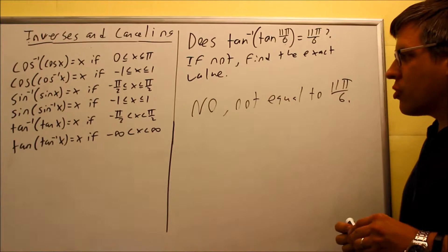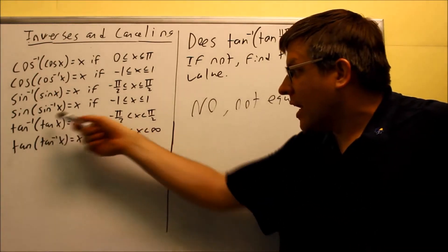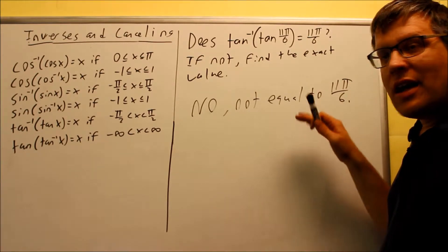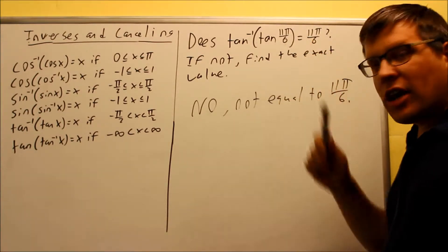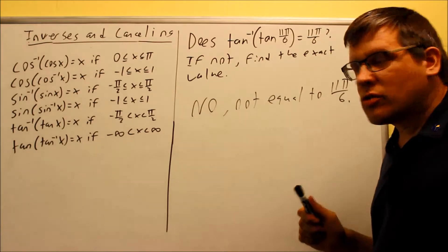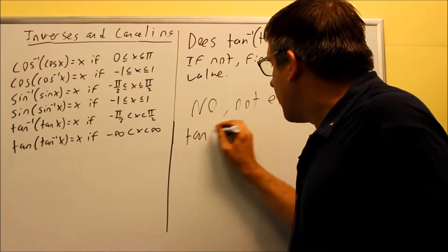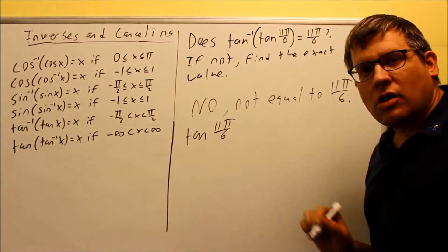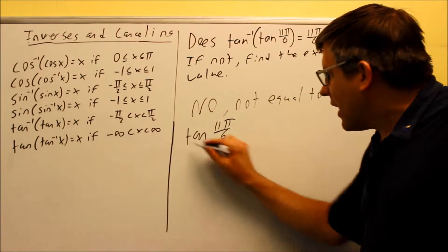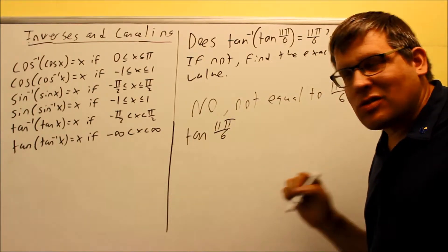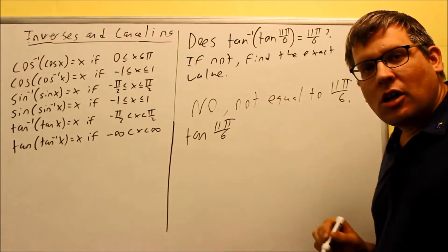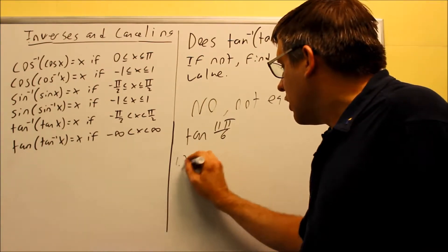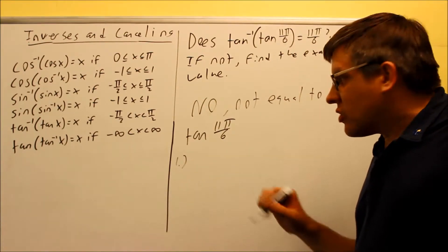Unfortunately, I'm not able to use this property to cancel it out and get the answer. Because of that, I have to go about it the other way — I have to find the exact value by using reference angles. So I want to first find the value of tan(11π/6), and then I'll take the inverse of that particular value. We've got to go through the three-step process for finding the reference angle.